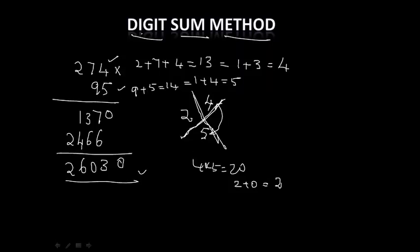Finally, we have to sum up the final answer what we got in that multiplication. So 2 plus 6 plus 0 plus 3 plus 0 is equal to 8. 8 plus 3 is 11. Again we have to add 1 plus 1. That is equal to 2. You put that 2 on the right hand side of your multiplication mark.